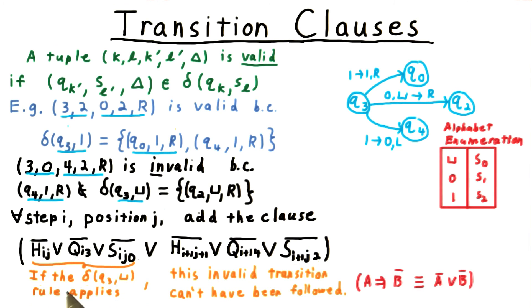Another way to parse this clause is as saying, if the q3 blank symbol transition rule applies, then this invalid transition can't have been followed. Logically, remember that A implies not B is equivalent to not A or not B.